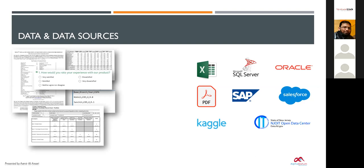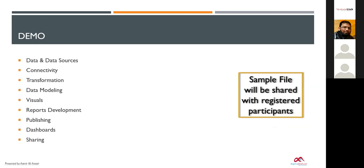One kind of data you can consider is business data, and another is open data, where you can find New Jersey's open data, New York's open data, and Kaggle. If you want to analyze market situations or market segments, there are datasets available to analyze. You can combine those datasets with your internal data and bring out value from them.